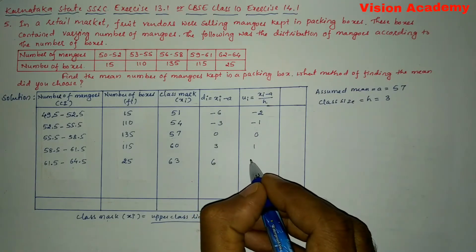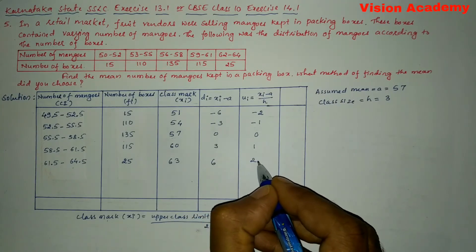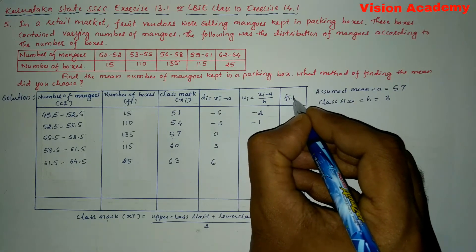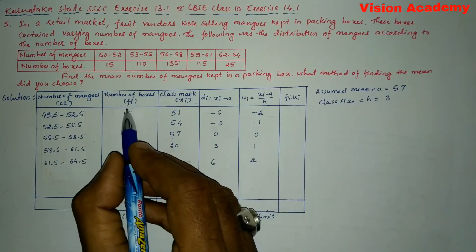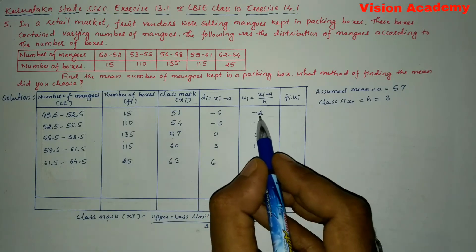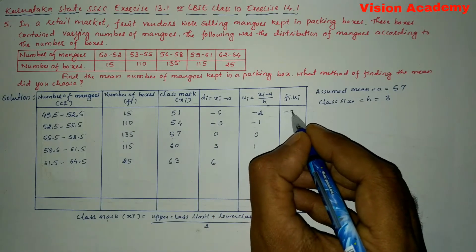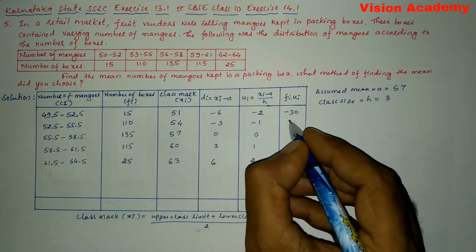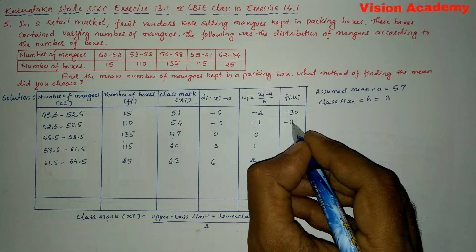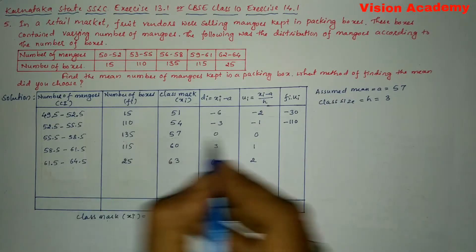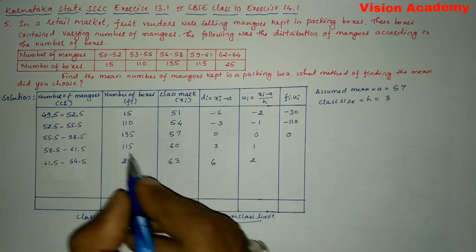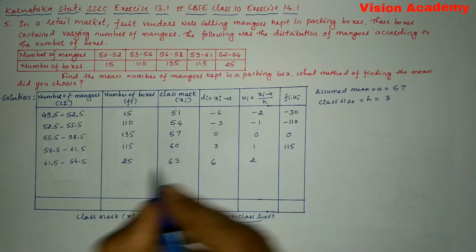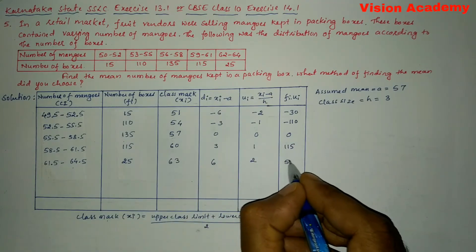Next we will write fi into ui. So here we are going to multiply this fi into ui. 15 times minus 2 is minus 30. Next 110 into minus 1 is minus 110. Next 135 times 0 is 0 only. 115 times 1 is 115. 25 times 2 is 50.